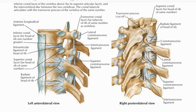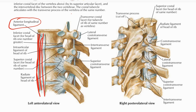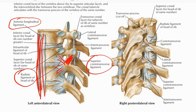Now we will see the ligaments. You will observe the anterior longitudinal ligament running anterior to the body of the vertebra. There is also the radiated ligament going from the body to the head of the ribs. There is a superior costo-transverse ligament extending from the upper border of the rib to the transverse process, an inter-transverse ligament between the two transverse processes, and a lateral costo-transverse ligament from the lateral side of the rib to the transverse process. This concludes the osteology of the thoracic vertebra.